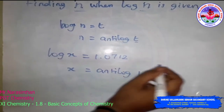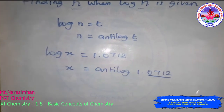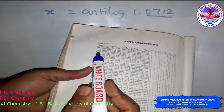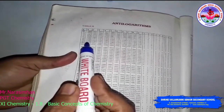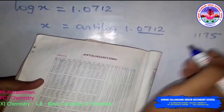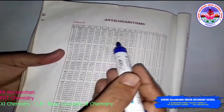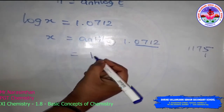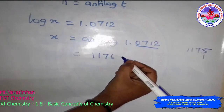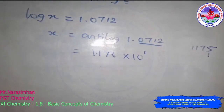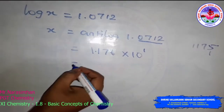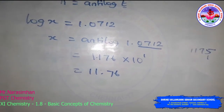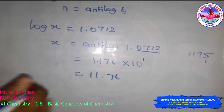Looking up 0.07 in the anti-log table gives 1175. The mean difference for digit 2 is 1, so the value becomes 1176. Since the characteristic is 1, x equals 1.176 into 10 power 1, which equals 11.76.